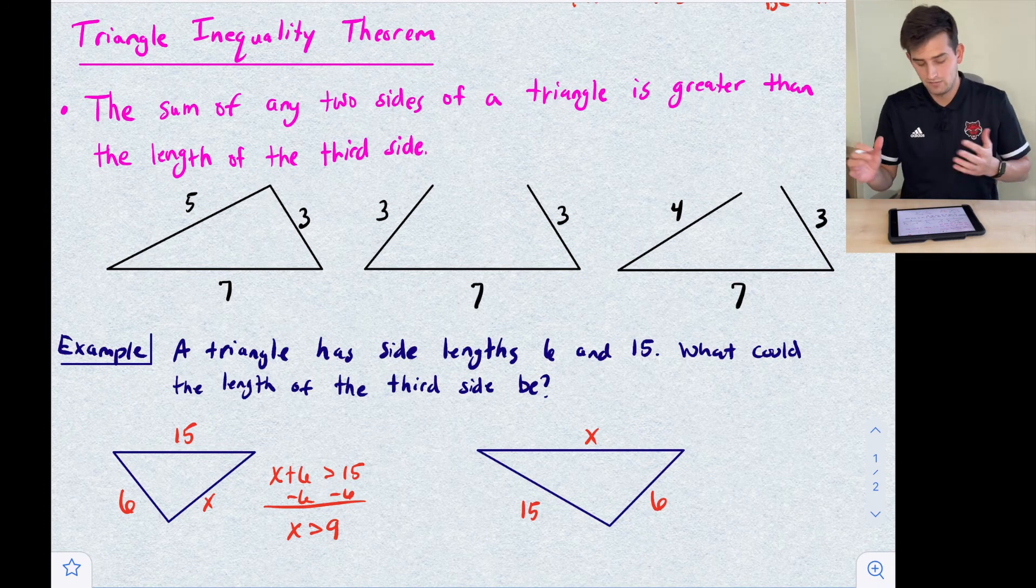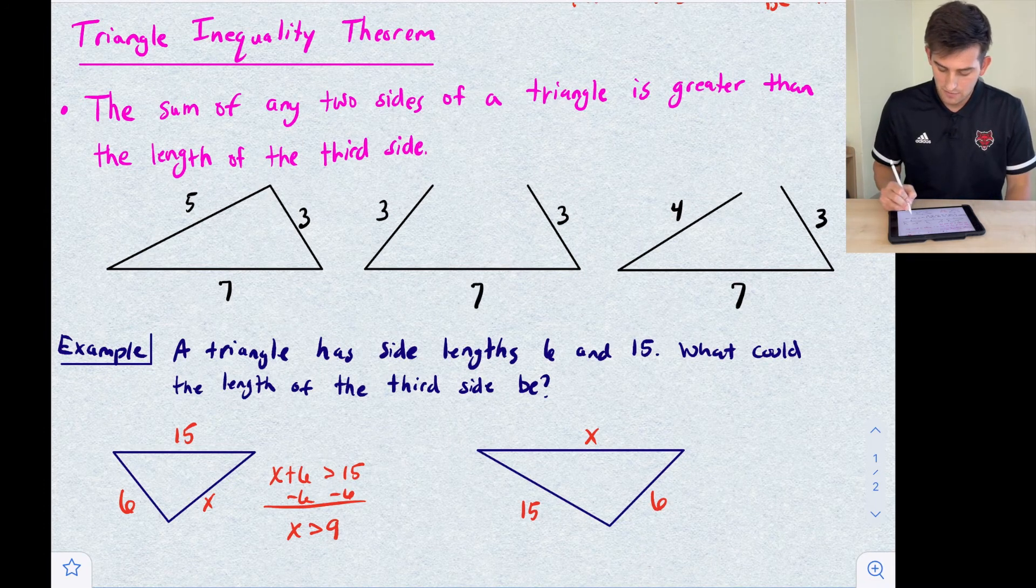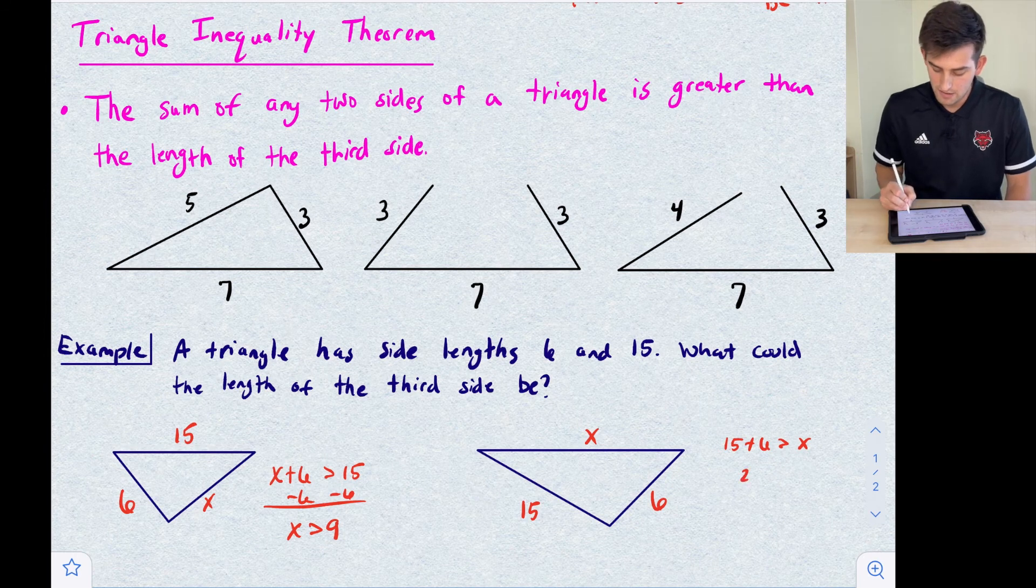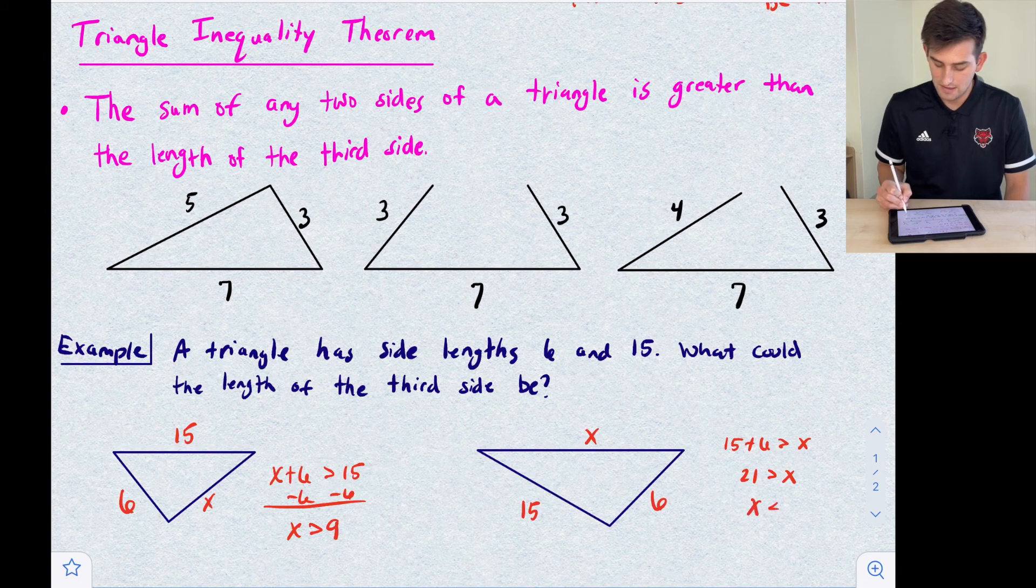The last one over here, we're going to say 15 and 6 needs to be greater than our other side because that's going to be our longest side. So we're going to say 21 is greater than x, or we could flip that and say x just has to be less than 21.